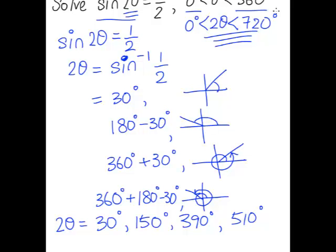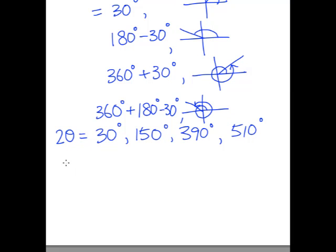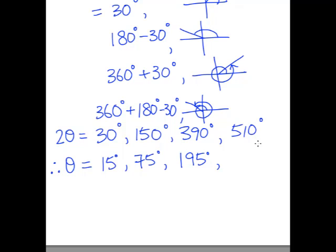To find θ, we divide all values by 2. So θ equals 30 divided by 2 = 15 degrees, 150 divided by 2 = 75 degrees, 390 divided by 2 = 195 degrees, and 510 divided by 2 = 255 degrees. These are our final values for θ.